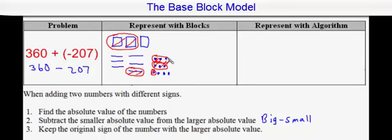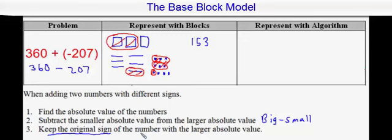What's left is 1 flat, which would be a 1 in the hundreds place; 1, 2, 3, 4, 5 rods, which would be a 5 in the tens place; and 1, 2, 3 units, which would be a 3 in the ones place. My final answer would be found by keeping the original sign of the number with the larger absolute value. 360 was larger in absolute value and its sign was originally positive, so my answer is positive 153.